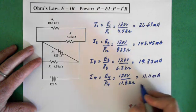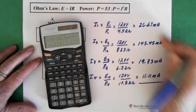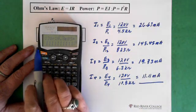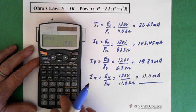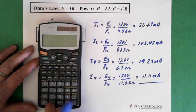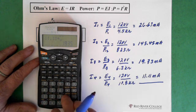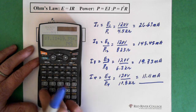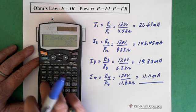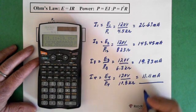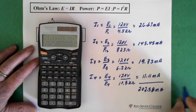So now what we can do is add up all those currents, and it should equal our total current. And I'm just going to add up the numbers, not the milliamps, because they're all in milliamps. So here's our 11.11 plus 19.35 plus 145.45 plus 26.67 equals 202.58 milliamps, which is our I total.